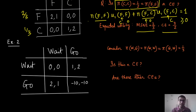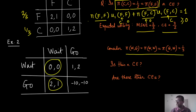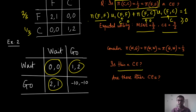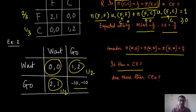Now consider the wait-and-go example. Consider the correlated strategy that puts one-third mass on each of three strategy profiles. You can verify that this is a correlated equilibrium. Also try putting half probability mass on go-wait and half on wait-go, and check whether that is a correlated equilibrium. Finally, consider whether any correlated equilibrium can give positive mass to the go-go outcome.